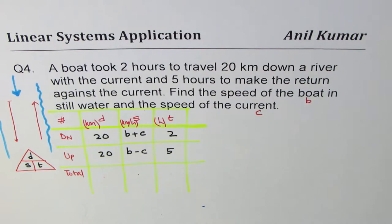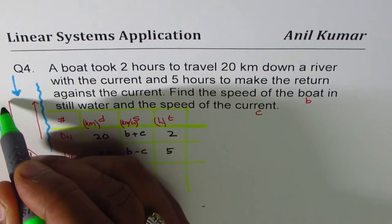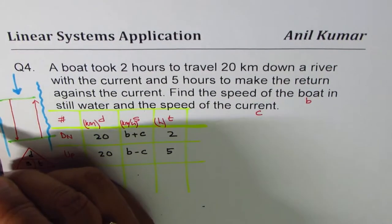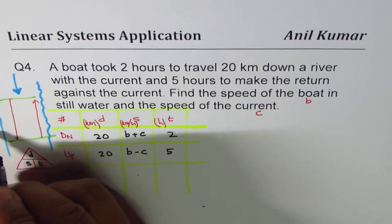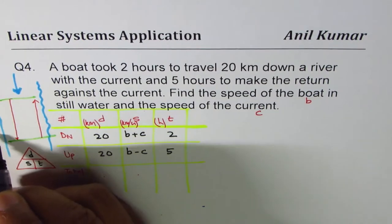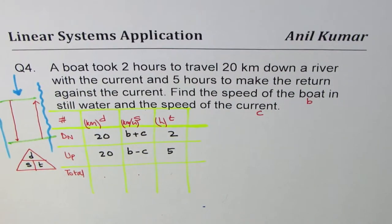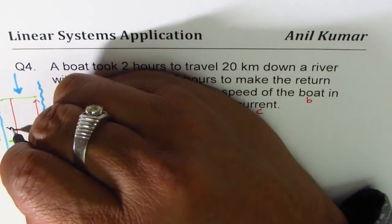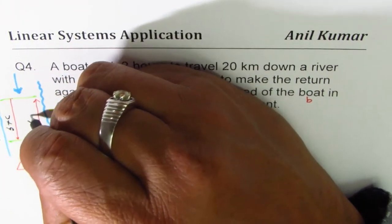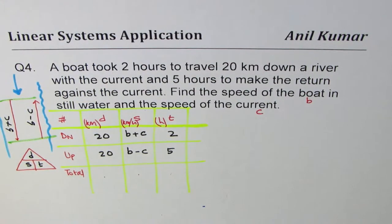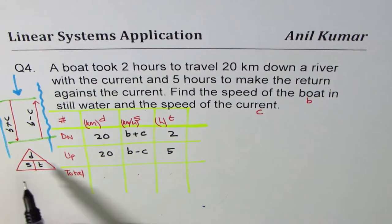So what we are saying here is that this distance is 20 for us. And the speed while going is boat plus C and here it is boat minus C. So that is the kind of situation. And now we will go to this triangle.